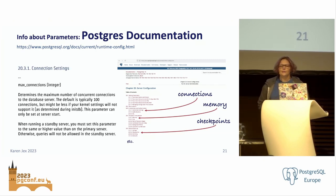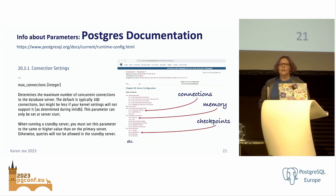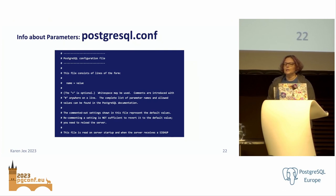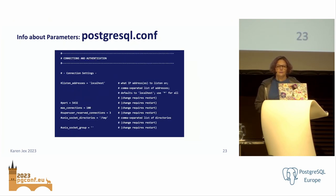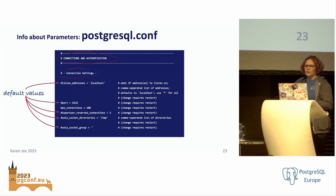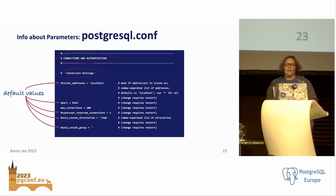For each parameter you'll see the name, type, description, default value, and its context. When you create a Postgres cluster, you get a default postgresql.conf file — it's a fairly verbose file containing an overview of how to use it and a list of all available parameters grouped as in the documentation. Commented-out values are the default values. Many people keep a copy of this file as a reference and then maintain a separate postgresql.conf that just contains the parameters they've actually set, so it's much more legible.